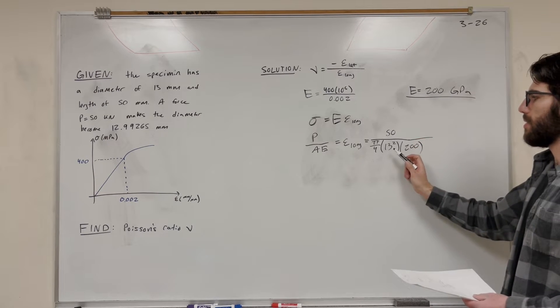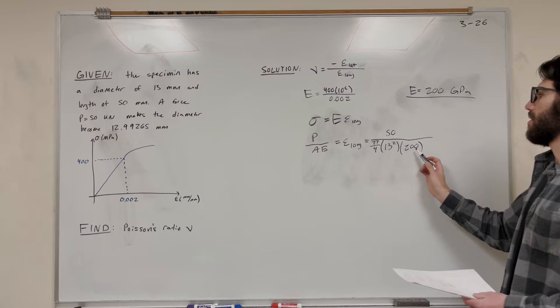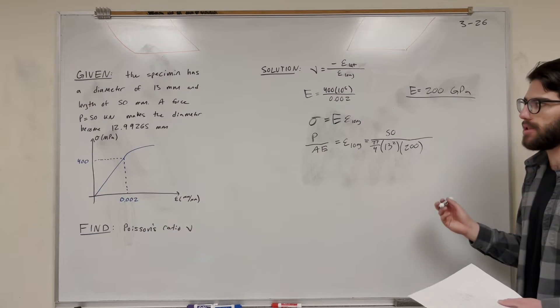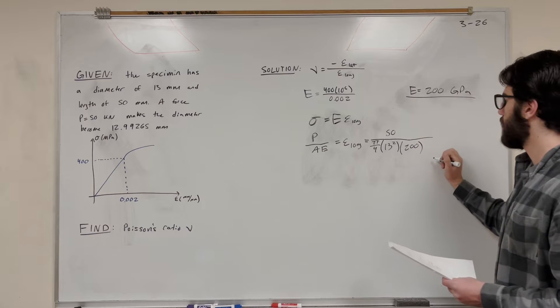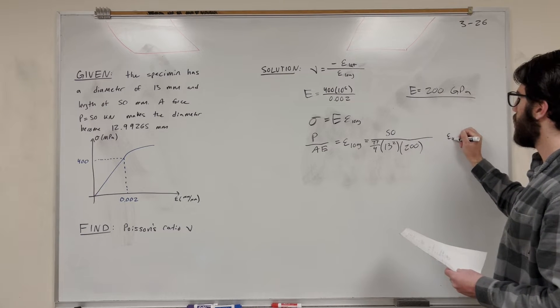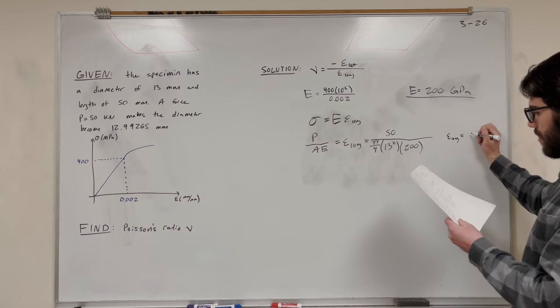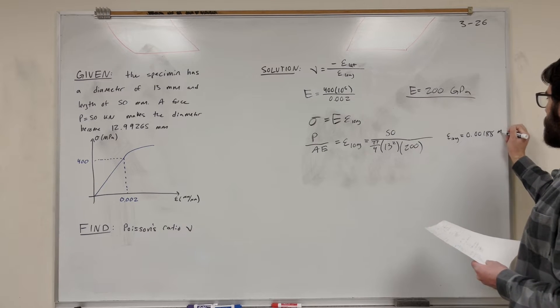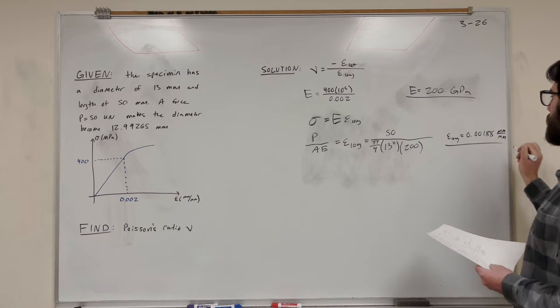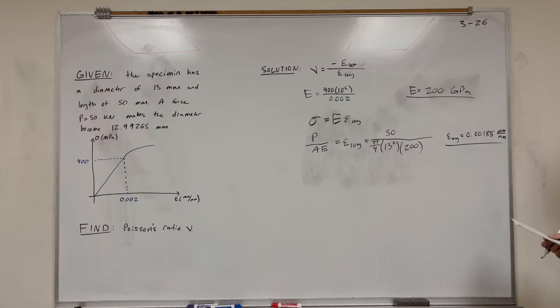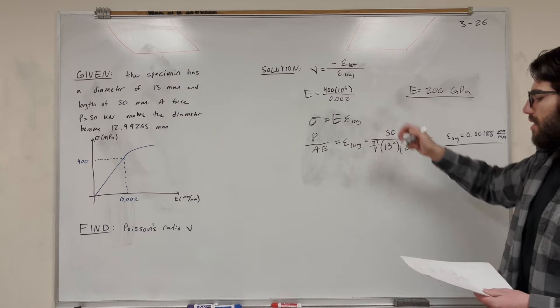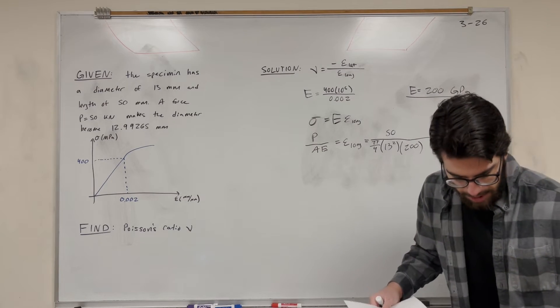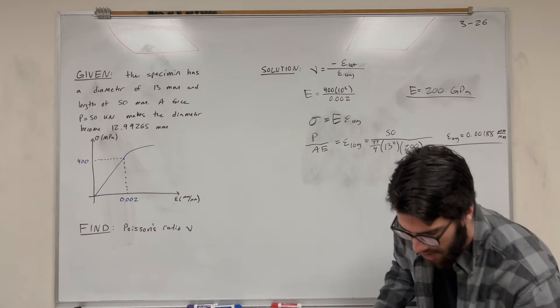Same as if you use newtons on top, meters on the bottom, and pascals on the bottom. It's going to give you the same number. And then you find that Epsilon is equal to 0.00188 millimeters per millimeter. So that's one half of the equation. Now we just need to find the other half of the equation, which is the lateral strain. So I'm going to take a seat and solve for that part.